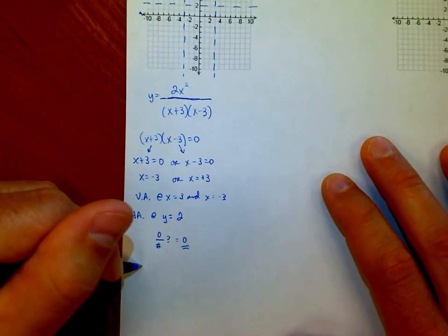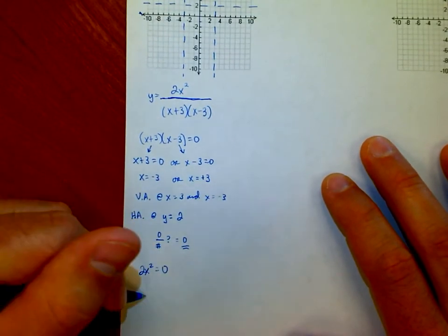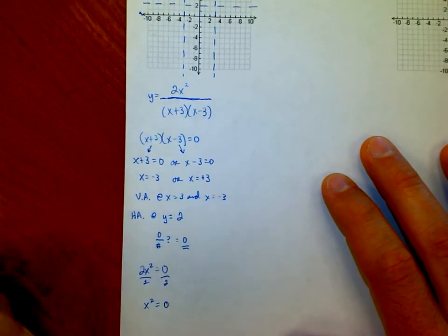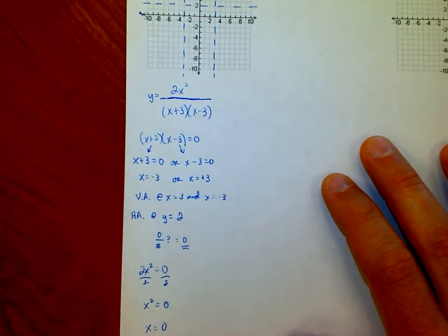In this case, 2x² is my numerator. So if I took 2x² and set it equal to 0 and solve for x, that'd be dividing out the 2 first. So x² equals 0 divided by 2, which is 0, square root plus or minus. It's just 0 in this case.